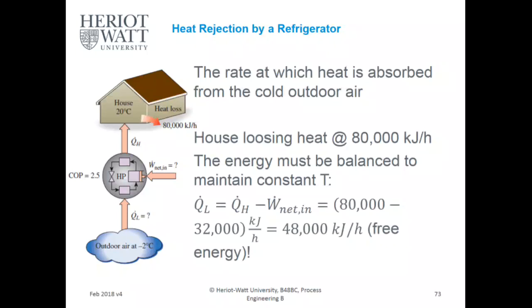So QL, your lower quality heat, equals QH minus the network, which is 48,000 kilojoules of heat. You're effectively stealing 48,000 kilojoules per hour of free energy from the atmosphere and putting it inside your house. When the temperature is below zero, this is not very efficient, so we try to get that heat from underground resources, but new technologies also include using thermal and solar thermal reservoirs.